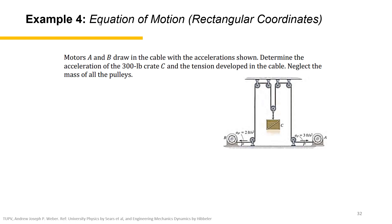Okay, so for the fourth example, motors A and B, we have two motors drawing the cable with the acceleration shown. Motor B is 2 feet per second squared and motor A is 3 feet per second squared. The question is the acceleration of the 300-pound crate C and the tension developed in the cable. Neglect the mass of the pulleys.